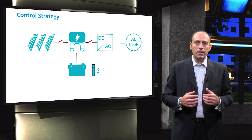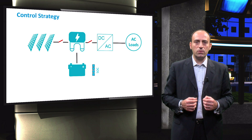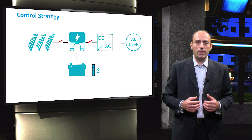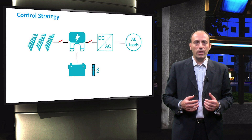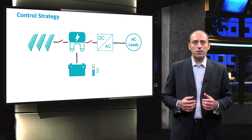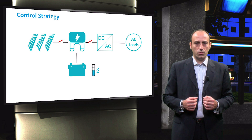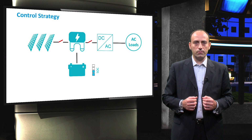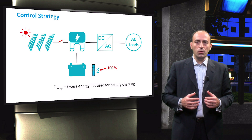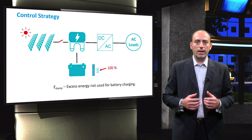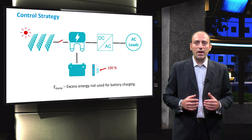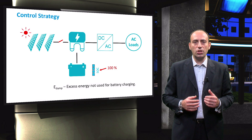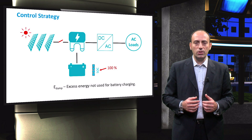Further, the algorithm presented here is based on monitoring the state of charge of the battery bank. Depending on the calculated state of charge, the switches are either open or closed. For example, during PV generation, when the SOC of the battery bank reaches 100%, the PV side switch is opened and the generated energy is subsequently dumped.